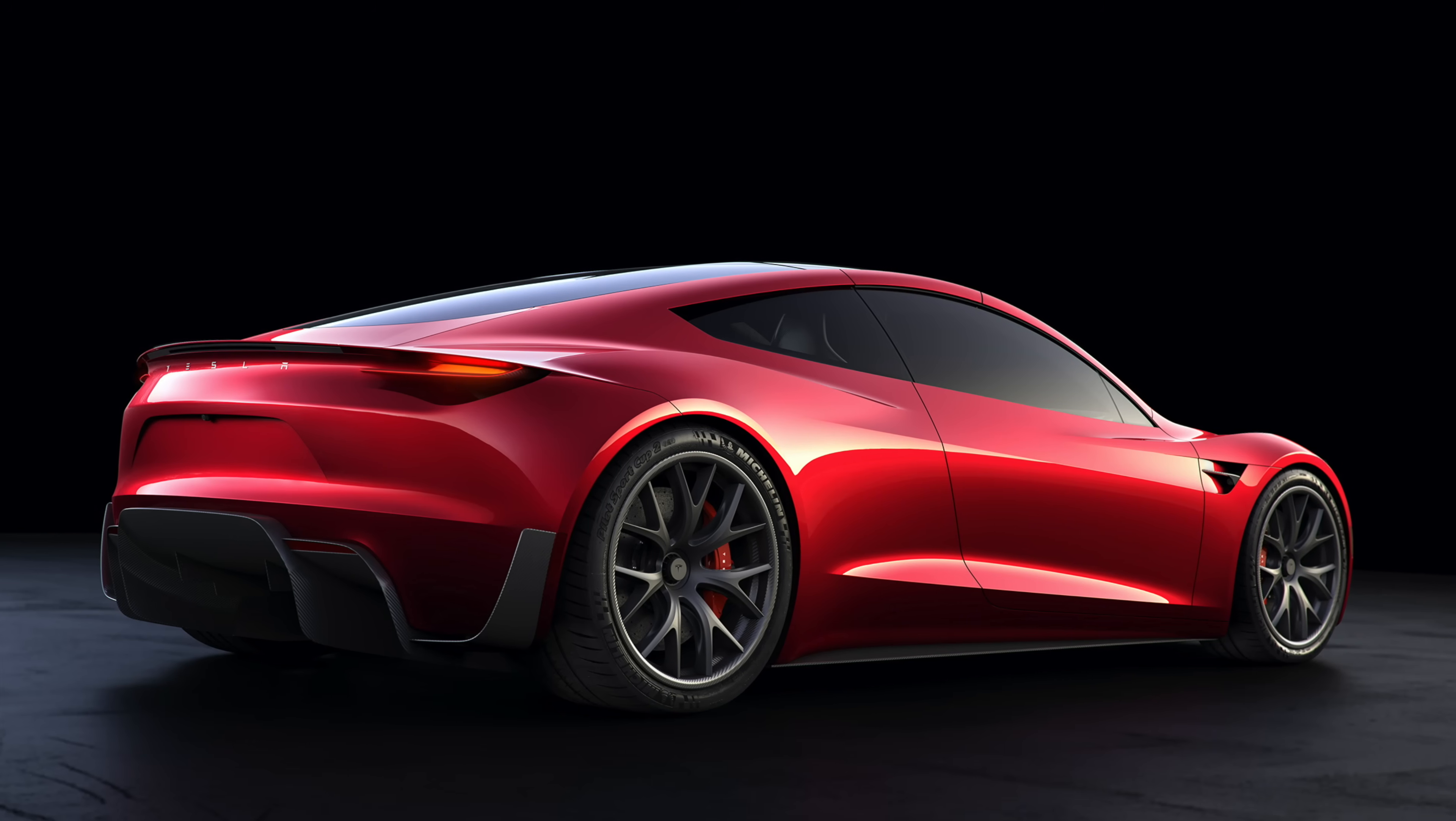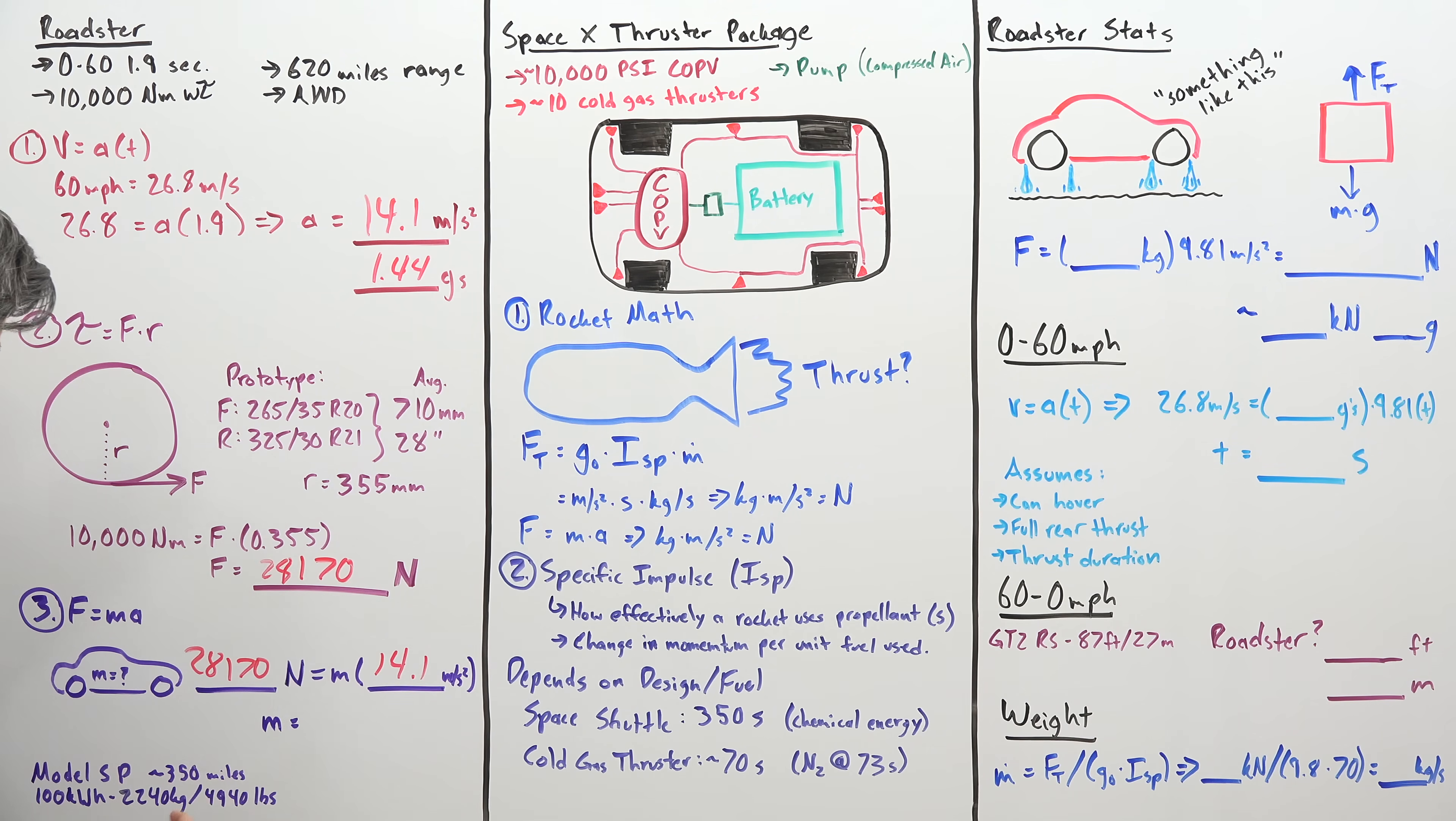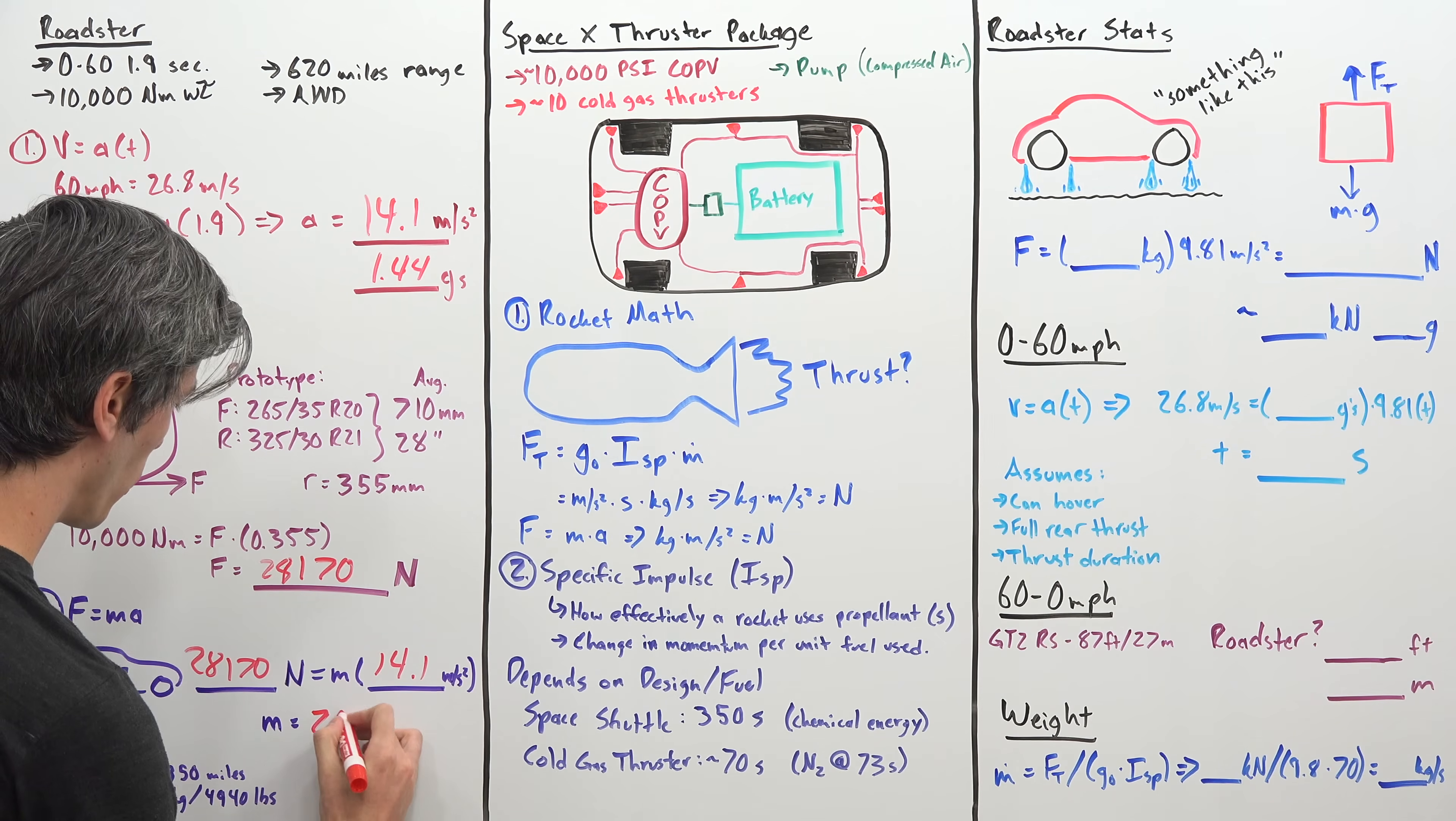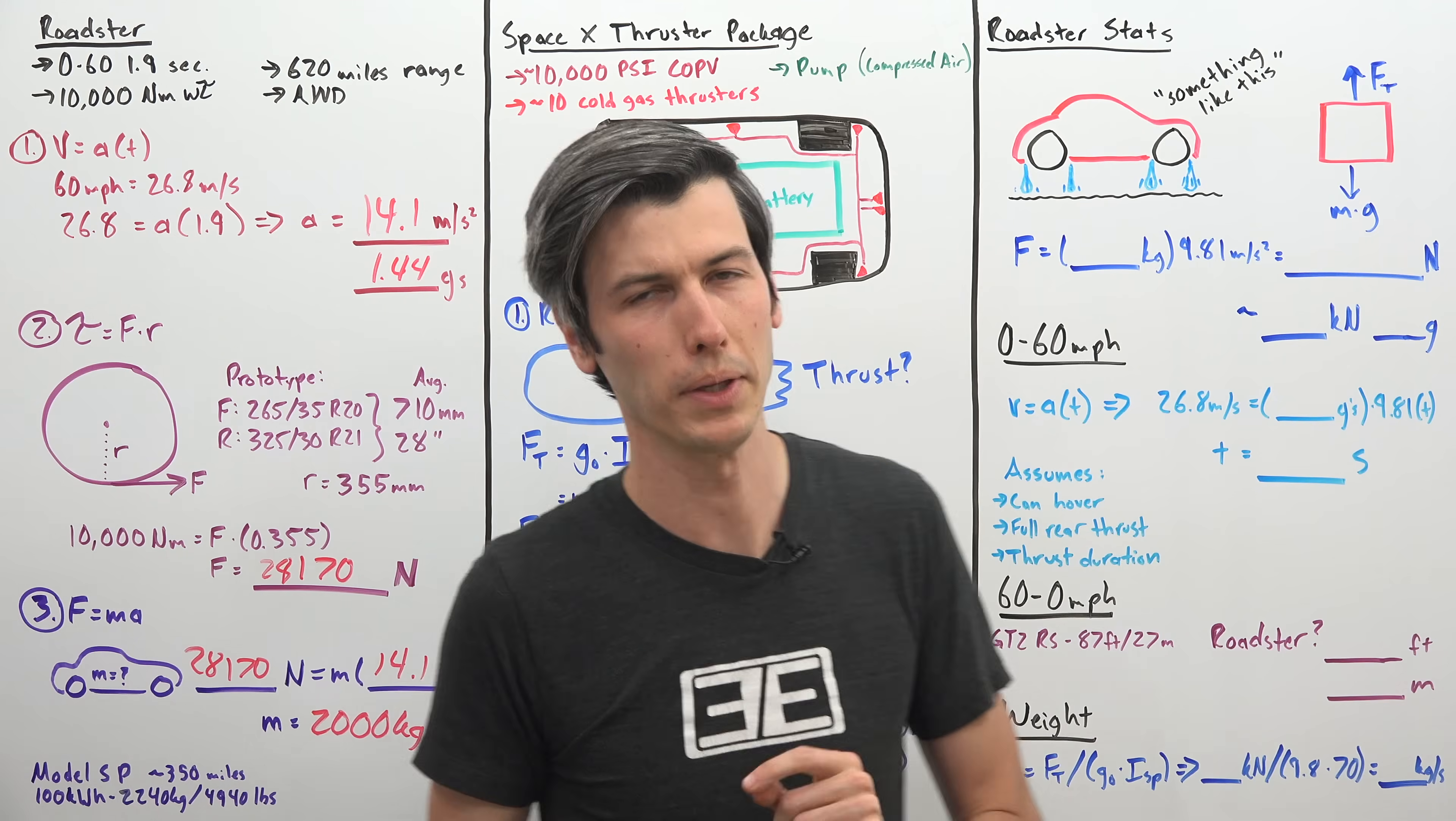So now we can get an estimate for how much this car is going to weigh. So 28,170 newtons, set that equal to mass multiplied by our acceleration, 14.1 meters per second squared, and that gives us a mass of 1,998 kilograms, which is conveniently close to 2,000 kilograms. So that would be my estimate for what I think the target weight for this vehicle is going to be.